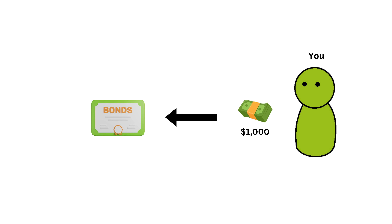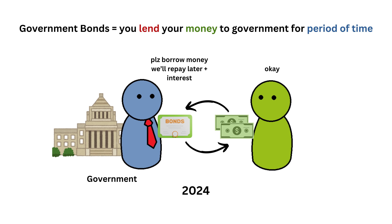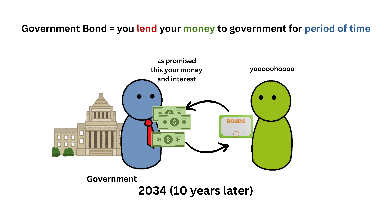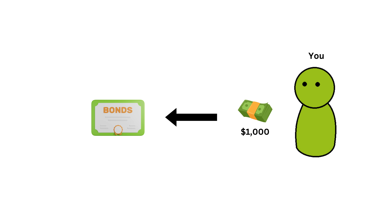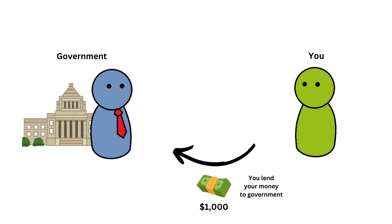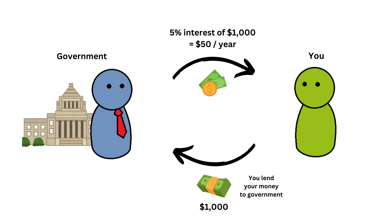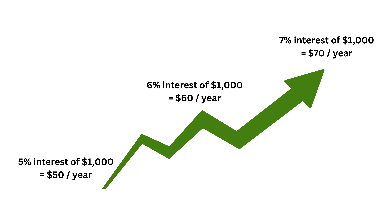For example, you want to invest in government bonds. Government bonds are when you lend your money to the government for a set period of time, then the government will return your money with the interest. Let's say you buy a government bond for $1,000 with 5% interest for 10 years. It means the government borrows your $1,000 and will pay you 5% interest on $1,000, which is $50 every year for 10 years. So the logic is, the higher the interest rate, the higher the return of investment.